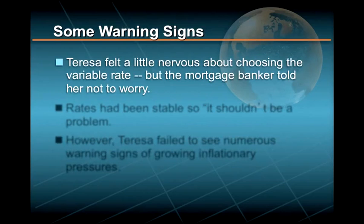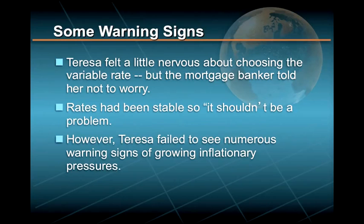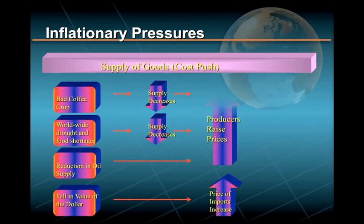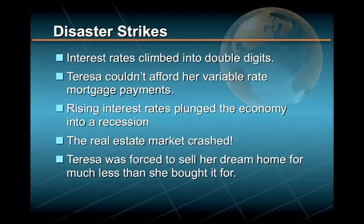Teresa felt a little nervous about choosing the variable rate, but the mortgage banker told her not to worry — rates had been stable for over three years. What Teresa failed to see, however, were numerous warning signs of growing inflationary pressures. On the demand-pull side, the unemployment rate had just reached an eight-year low. On the cost-push side, the news was full of stories about a bad coffee crop in Brazil, a worldwide drought and possible food shortages, renewed violence in the Middle East and rising oil prices, and a fall in the value of the dollar. Within two years, interest rates had climbed into the double digits, and Teresa could no longer afford her skyrocketing mortgage payments.